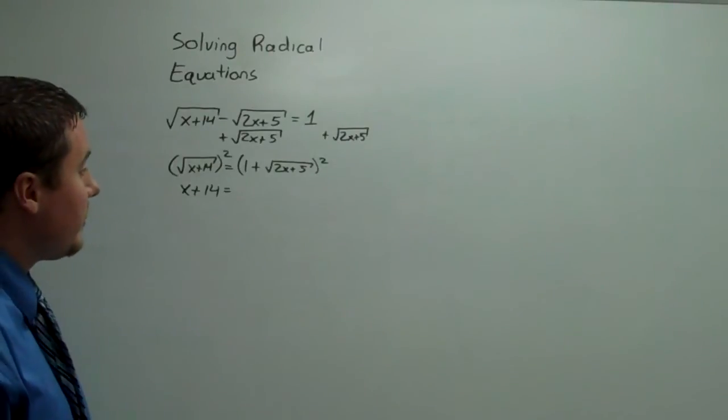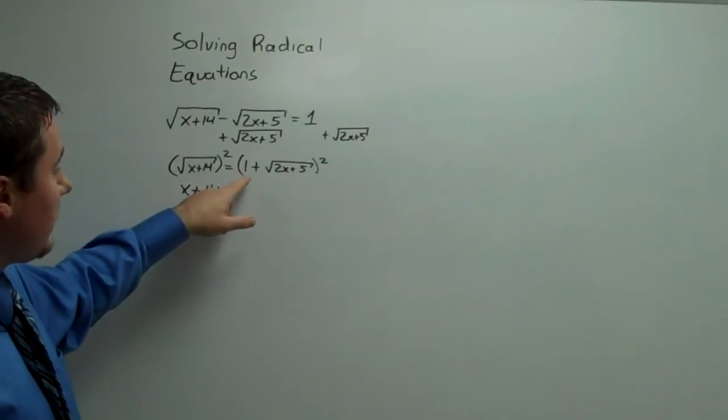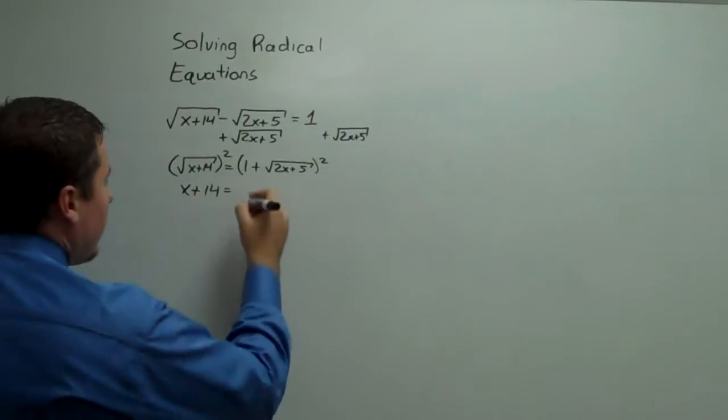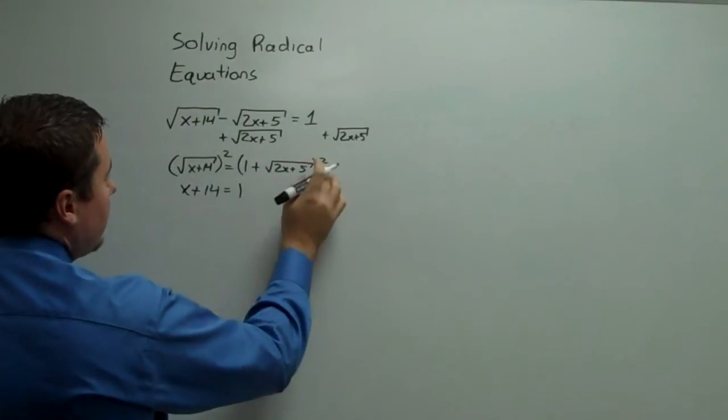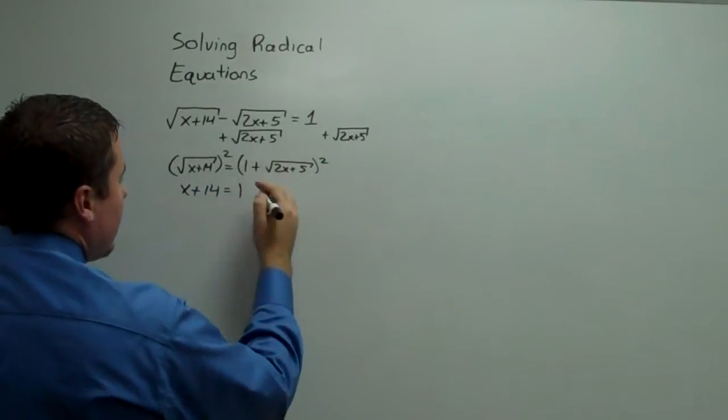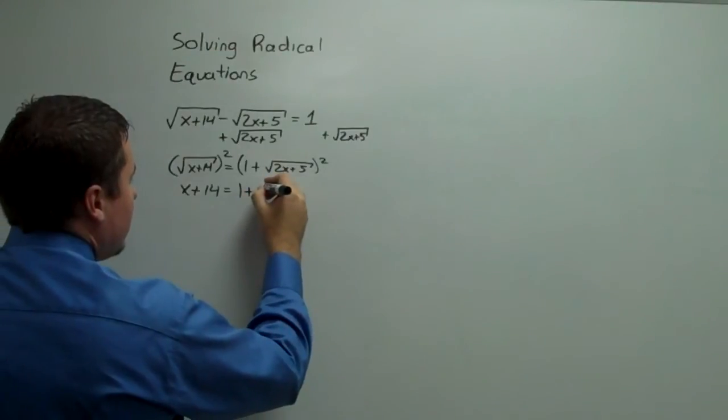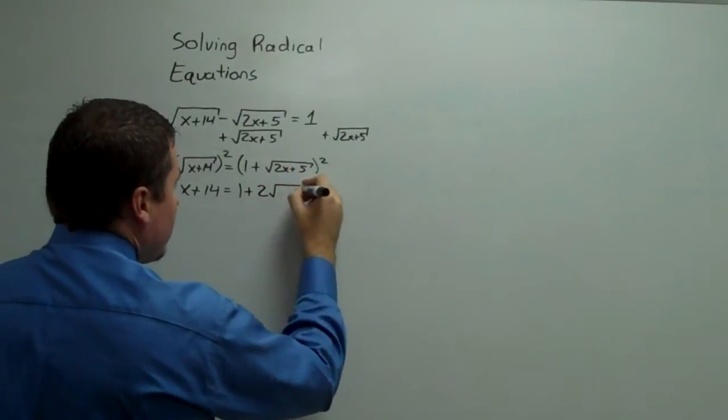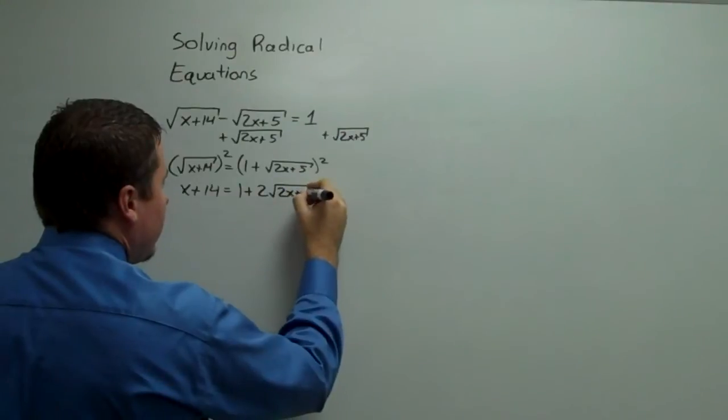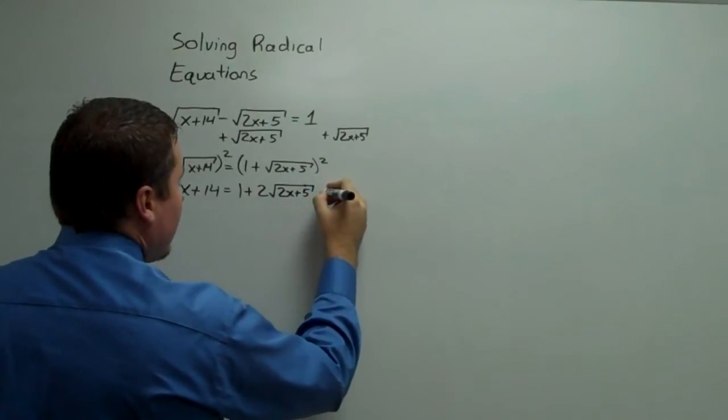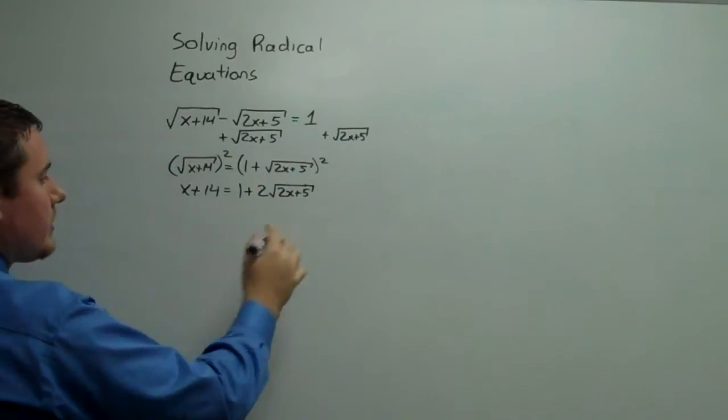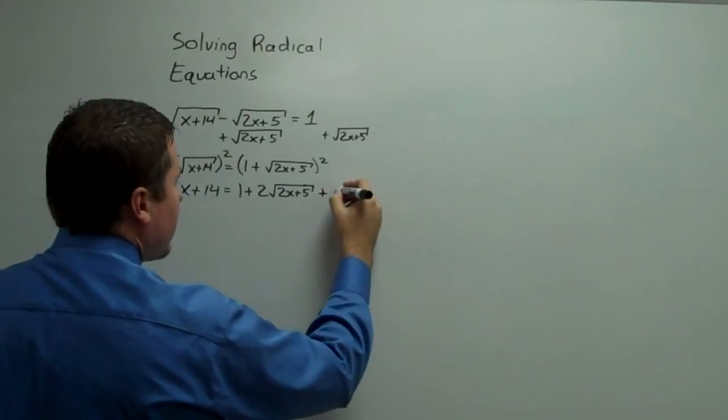Now, we've done a lot of binomial squareds, so they should be familiar. 1 squared is 1. 2 times 1 times this, so 2 square roots of 2x plus 5. And then the square of the last term, which is just 2x plus 5.